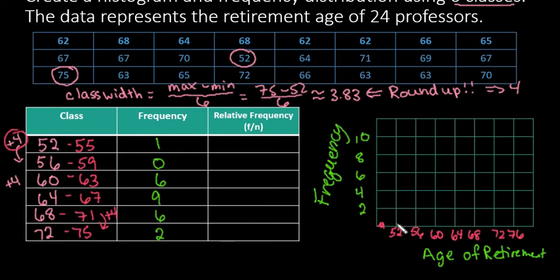Start at 52 and go up to where 1 is and put a line. You can fill it in if you want. For the next one we didn't have any. For 60 to 64, I had 6, so I go up to where 6 is and draw my bar.